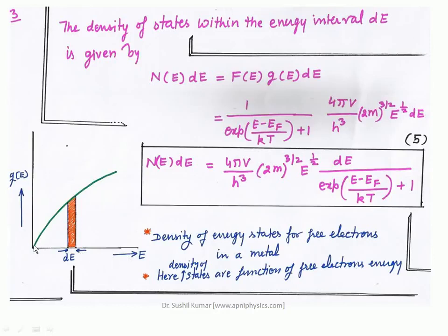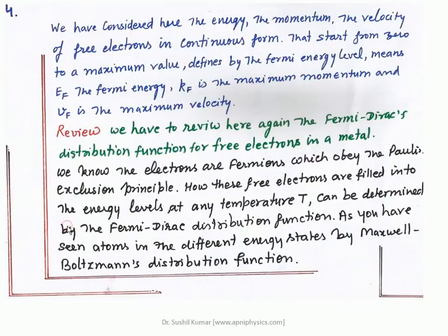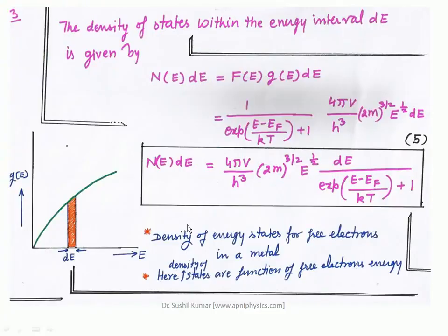If one draws the density of states with respect to energy, the behavior is like a curve — within this energy interval dE it indicates the quantum states. The density of energy states for free electrons in a metal is a function of the free electron energy. All these relations are derived keeping in mind that all variables — momentum, velocity, energy — have a continuous range from 0 to a maximum value.